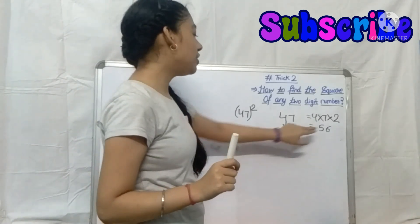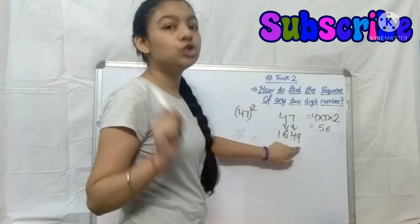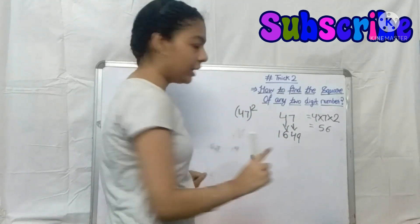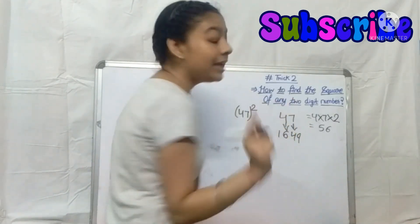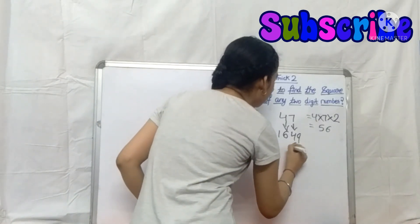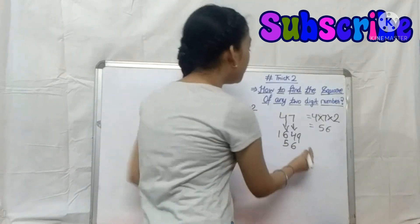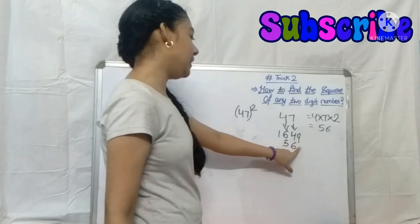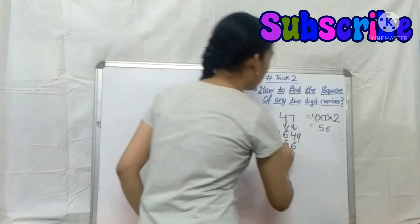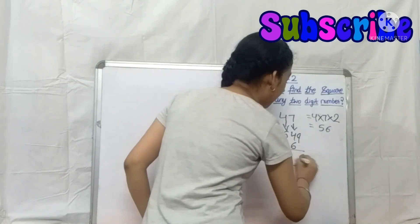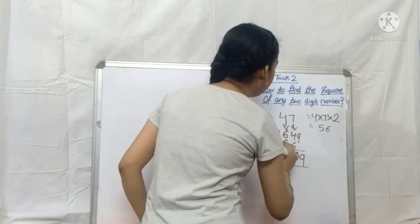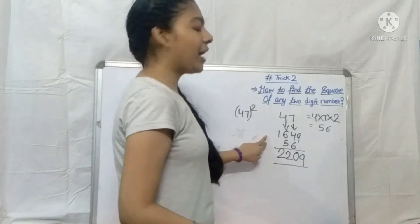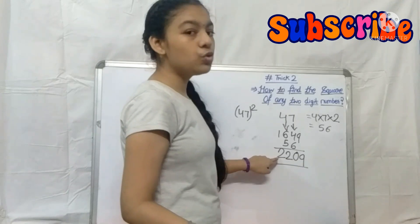Now for the third step: we take 56 and shift it one place to the left — that is, we leave the unit place and write 56 starting from the tens place. So we place 56 shifted, leaving the unit digit space. Then we add 1649 and 56 with this offset. Adding gives us 9, then 0, then 2, then 2 — so the square of 47 is 2209. You can check it also.